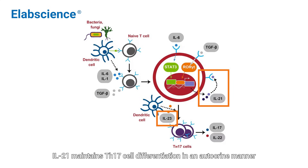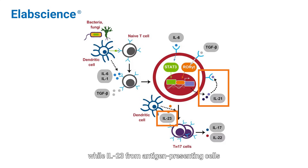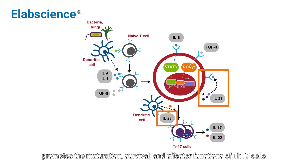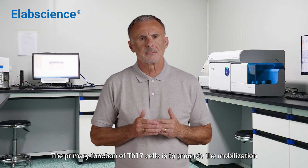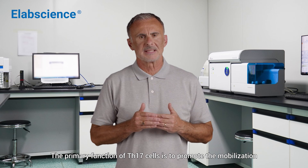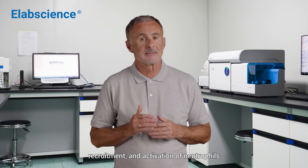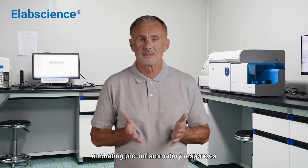IL-21 maintains TH17 cell differentiation in an autocrine manner, while IL-23 from antigen-presenting cells promotes the maturation, survival, and effector functions of TH17 cells. The primary function of TH17 cells is to promote the mobilization, recruitment, and activation of neutrophils, mediating pro-inflammatory responses.